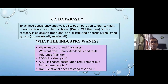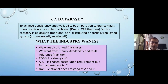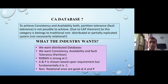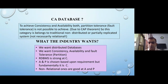What the industry wants is distributed databases with consistency, availability, and fault tolerance — all at the same time. But CAP says all three simultaneously are difficult or impossible to achieve. RDBMS is strong at consistency — that is why for transactional databases we still use RDBMS. A and P are chosen based on requirement, but fundamentally RDBMS works around C. For non-relational systems, the goal is P and A.